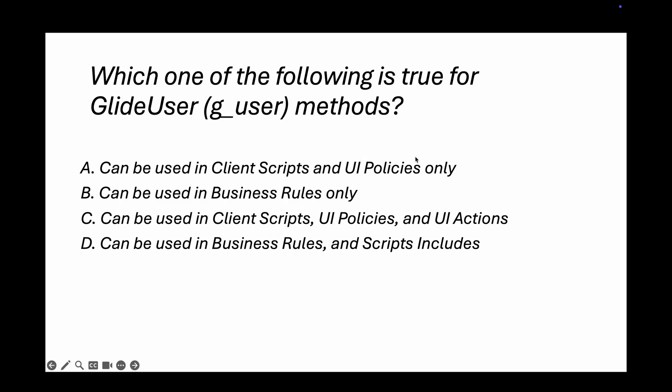So the remaining options are: client script and UI policy, or client script, UI policy, and UI actions. UI actions can be used on both server and client side, so we can use g_user in a UI action when doing client-side configuration. I've discussed configuring UI actions with different use cases in my ServiceNow development playlist. The right answer is option C.